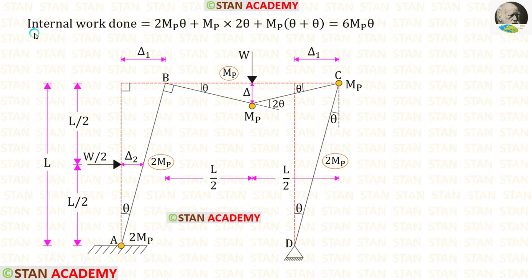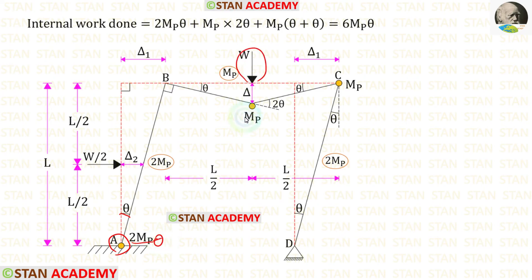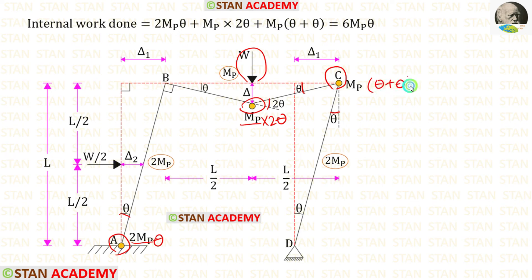Now let us find the internal work done. At point A we have a plastic hinge; we multiply 2MP by angle θ. Under the point load we have a plastic hinge; we add the two angles θ + θ and multiply by MP.